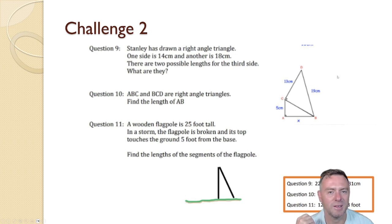So just pause the video, see if you can do these three questions. Cool, so the first one: Stanley is drawing a right angle triangle, one side is 14 centimeters and the other is 18 centimeters. What are the two possible lengths for the third side?